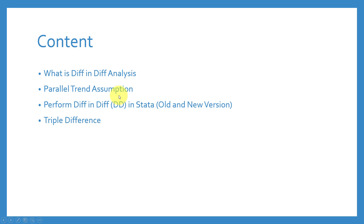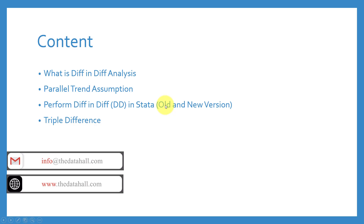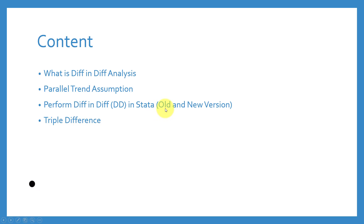Then we are going to look into the parallel trend assumption — the assumption required for difference-in-difference to work. We are going to perform difference-in-difference in Stata, both in the old version and the newer versions. If you have Stata 16 and before, there were no specific built-in commands, so you would have to do that manually. In Stata 17 and onwards, there are built-in commands with graphs and more.